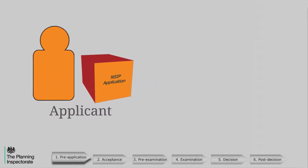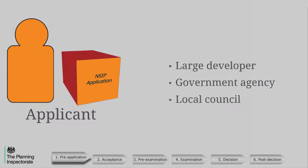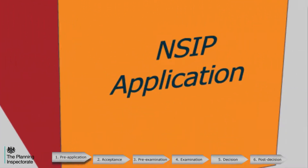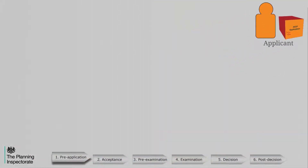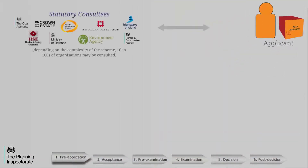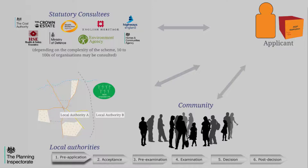An applicant is likely to be a large developer, a government agency, or possibly a local council. The Development Consent Regime is a front-loaded process. This means the development proposal has to be fully scoped and refined before the submission of an application to the Planning Inspectorate. It is at this stage that the applicant must formally consult with all statutory bodies, local authorities, the local community, and any affected persons.